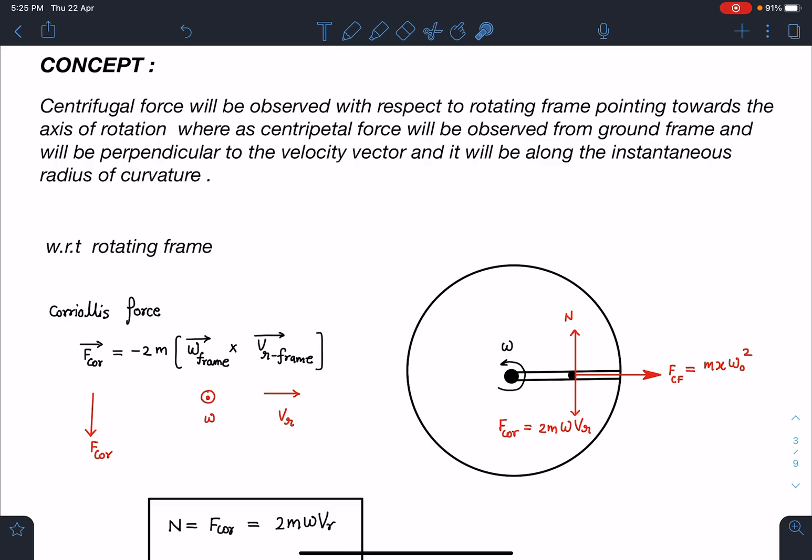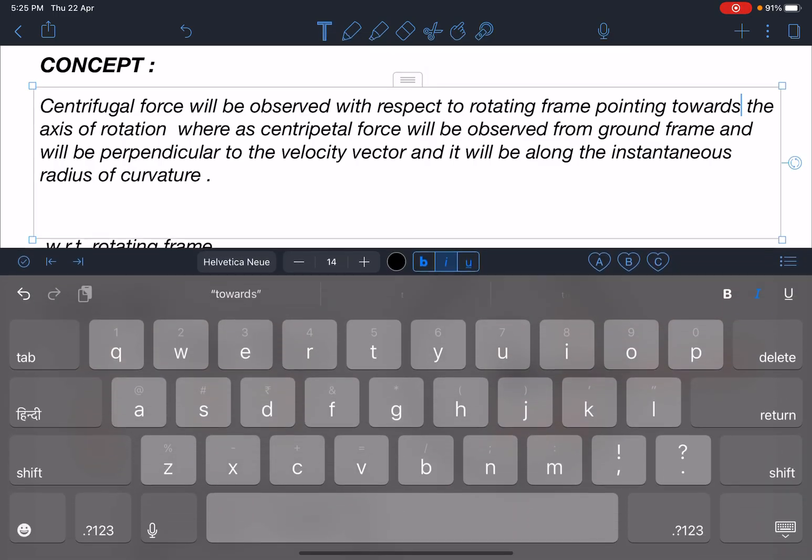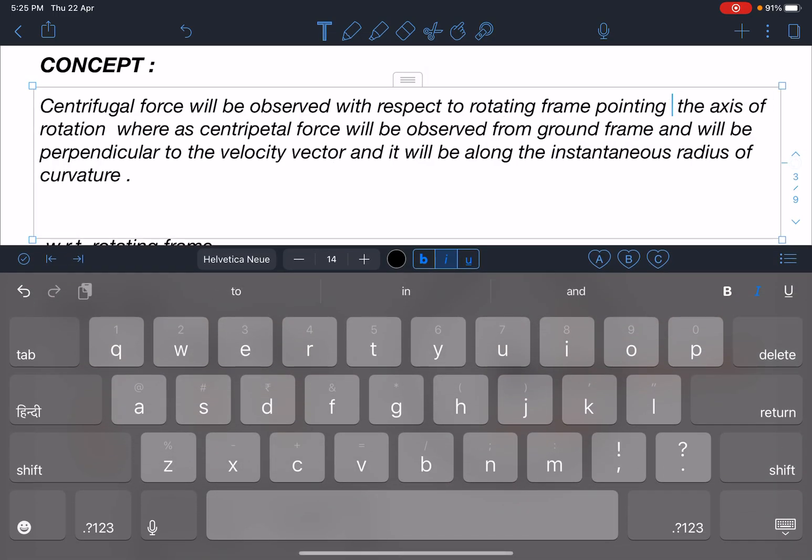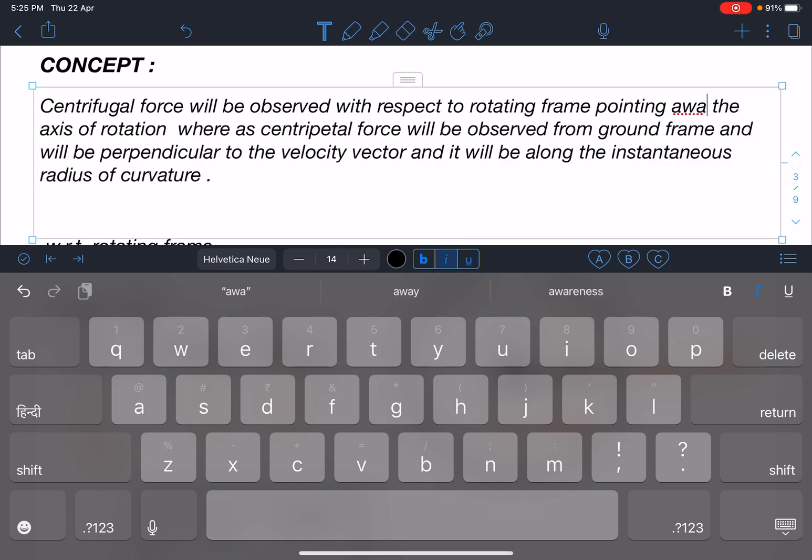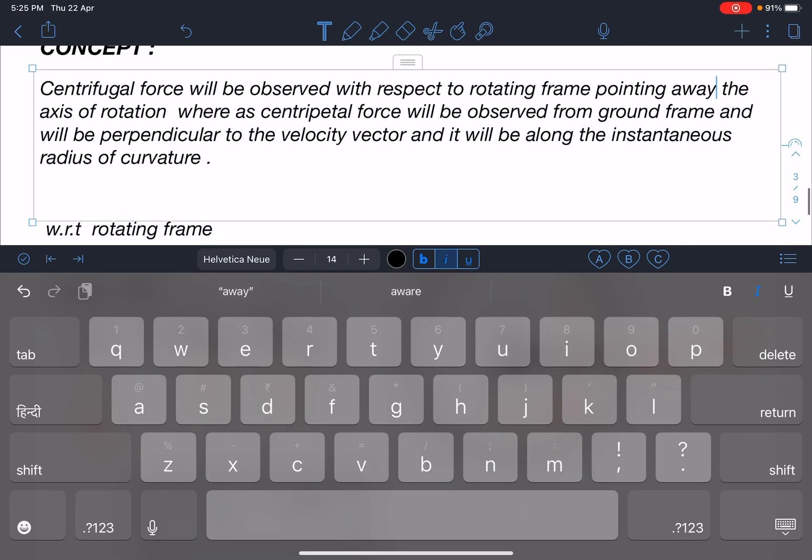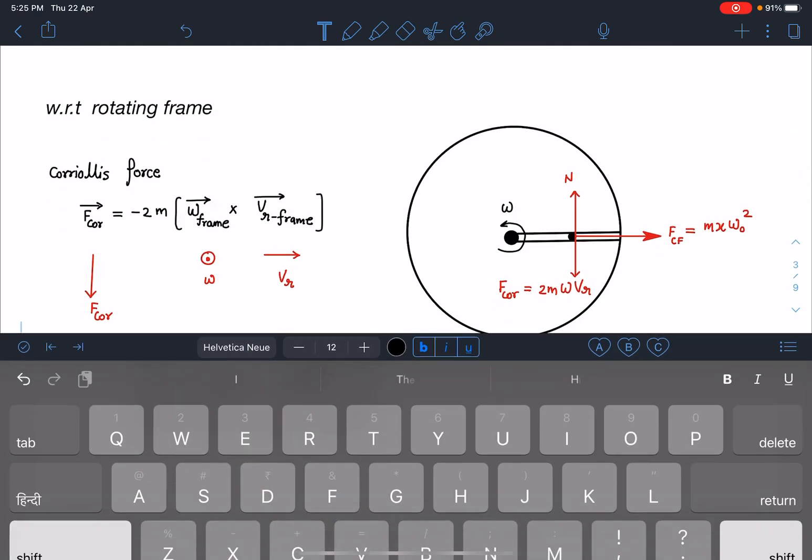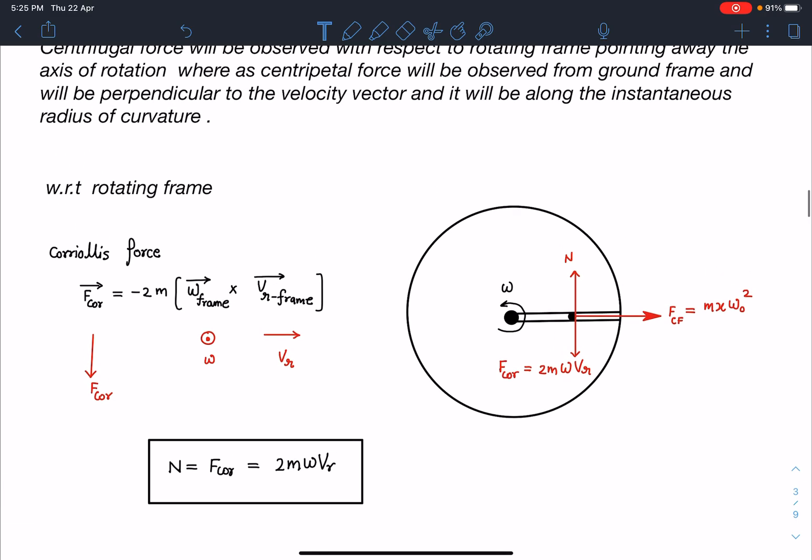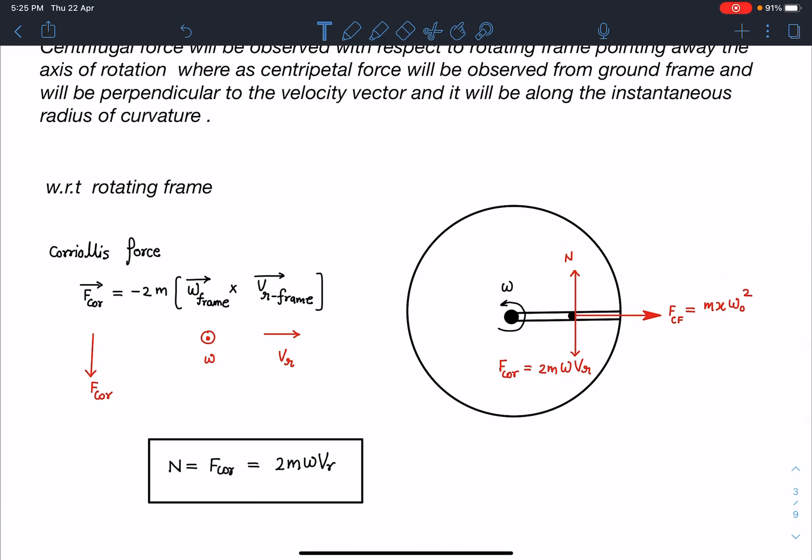So here there is a correction, it is not towards, it is away. It will be pointing away from this. Here we can balance this force of N and this Coriolis force, so we will get the normal reaction acting on the particle. Its value is going to be 2m omega vr.